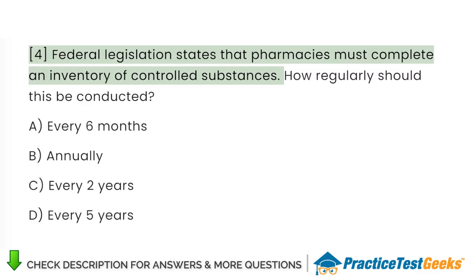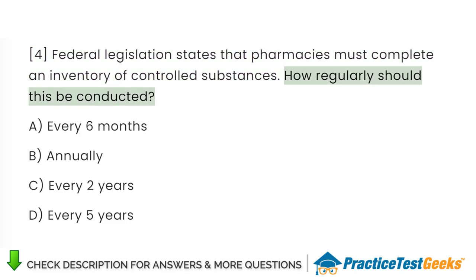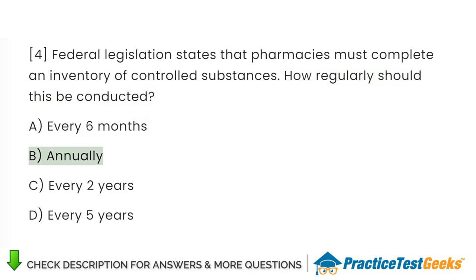Federal legislation states that pharmacies must complete an inventory of controlled substances. How regularly should this be conducted? A. Every 6 months. B. Annually. C. Every 2 years. D. Every 5 years.